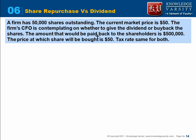Let's take this example: a firm has 50,000 shares and the current market price is $50. The CFO is contemplating whether to go for a dividend or a buyback. The amount to be paid back to shareholders is $500,000. If going for a buyback, shares would be repurchased at $50 per share, and we assume the tax rate is the same in both cases.